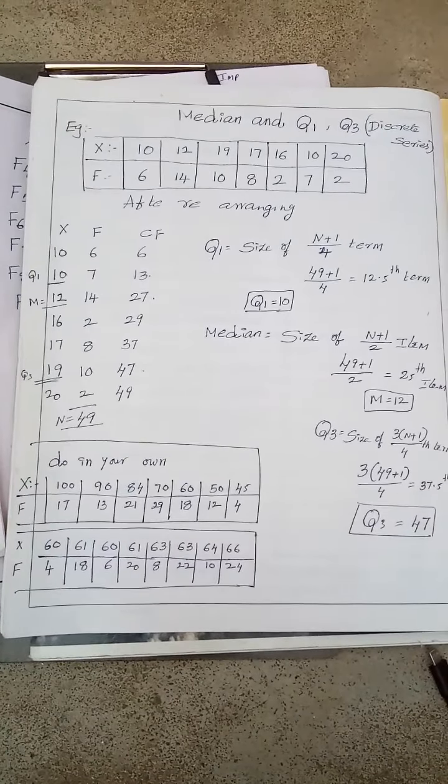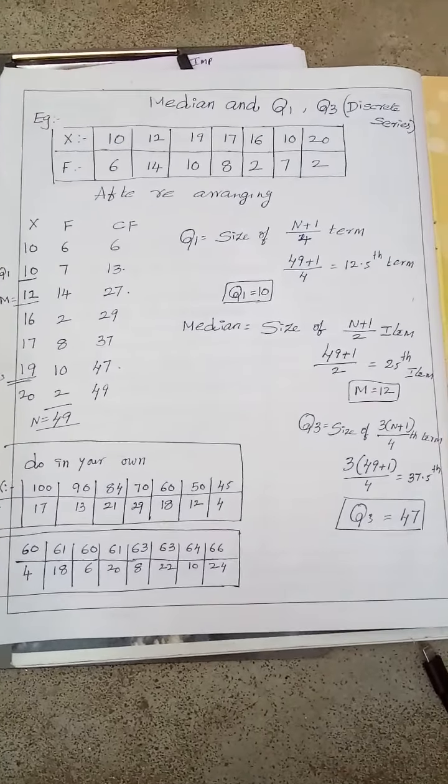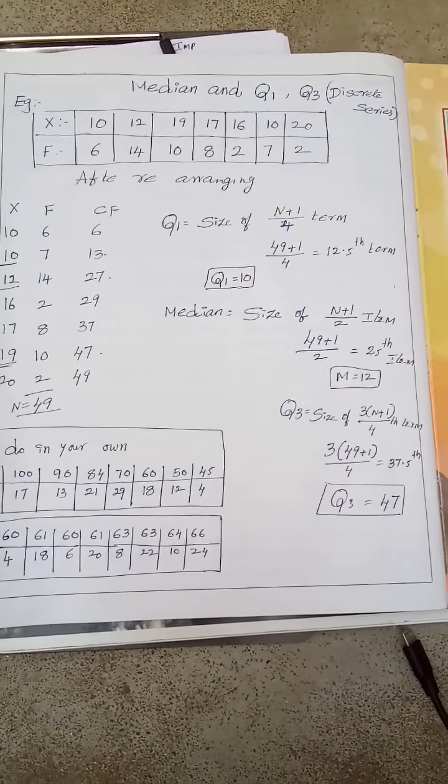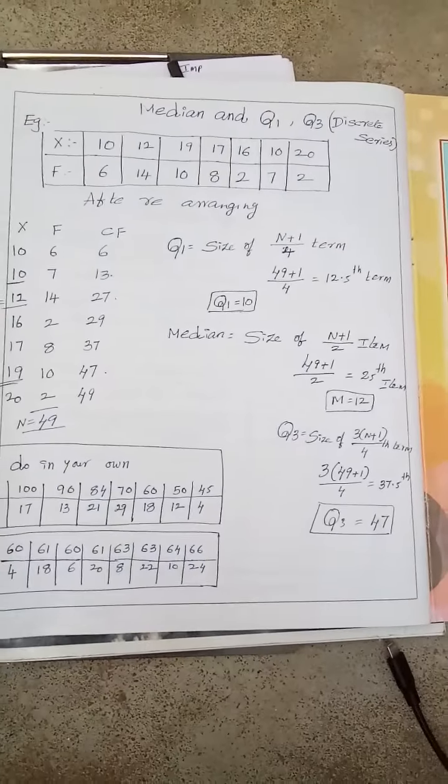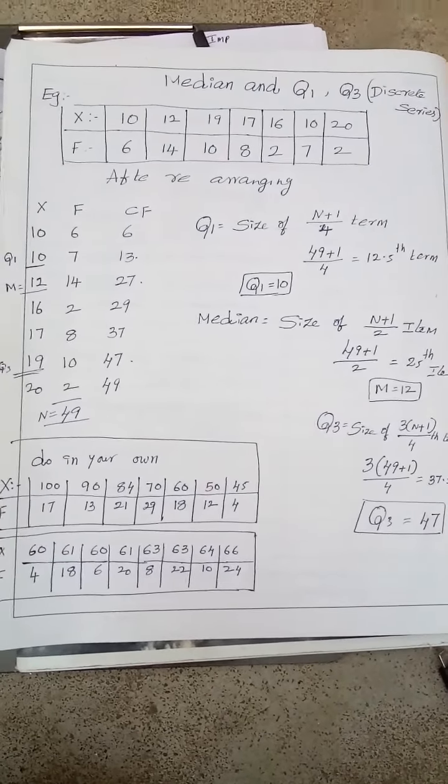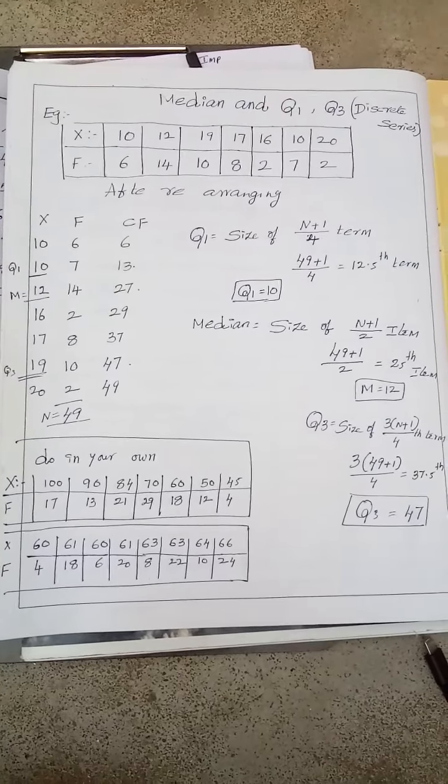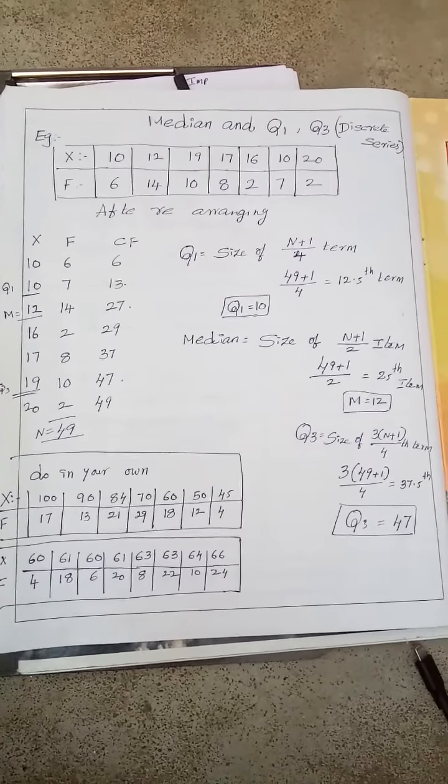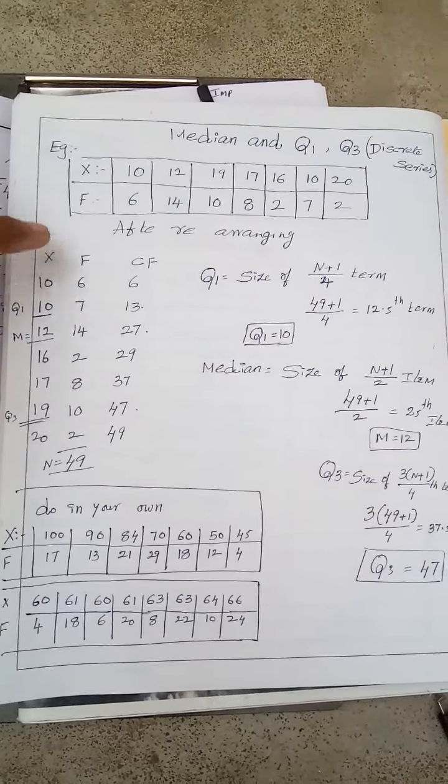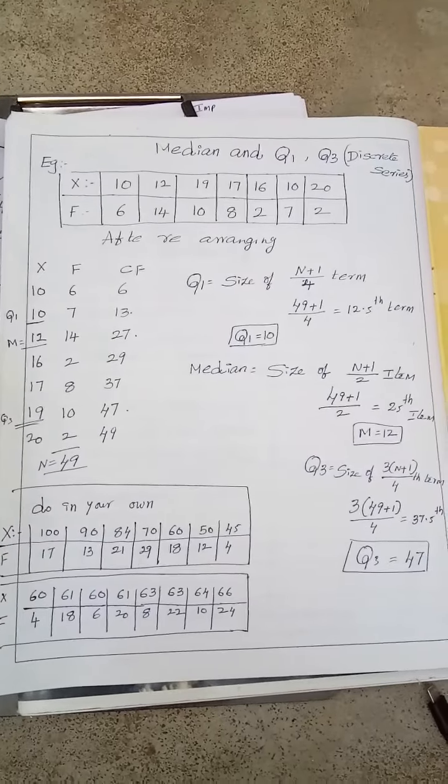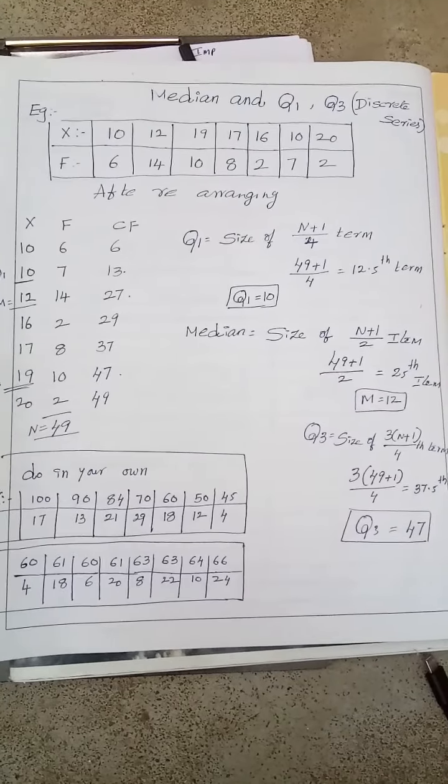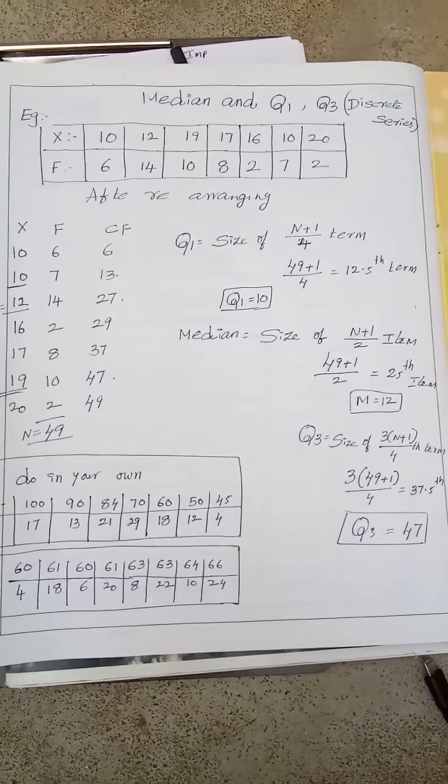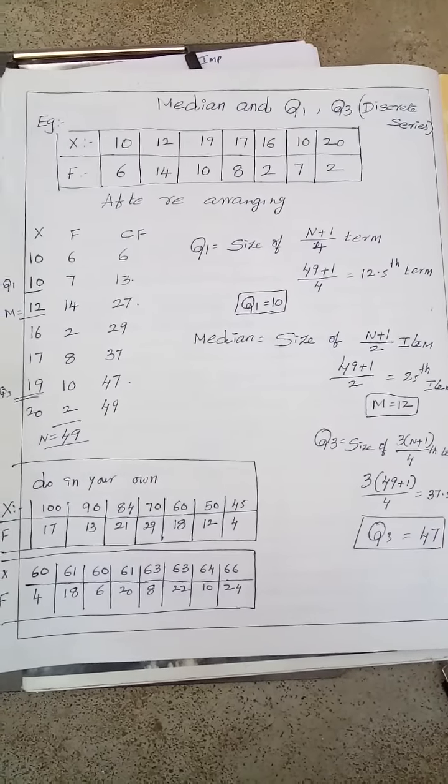And one thing I want to say, my students, the good thing in statistics is when you practice more, you will be able to learn more and more. When a new formula comes, don't forget the old formulas. Do remember all the formulas and keep practicing. First of all you have to take X, F, CF, then apply the formula. N means total of the frequency. My dear students, give time for stats. The more you practice, the more you will get. I wish you all the best, thank you.